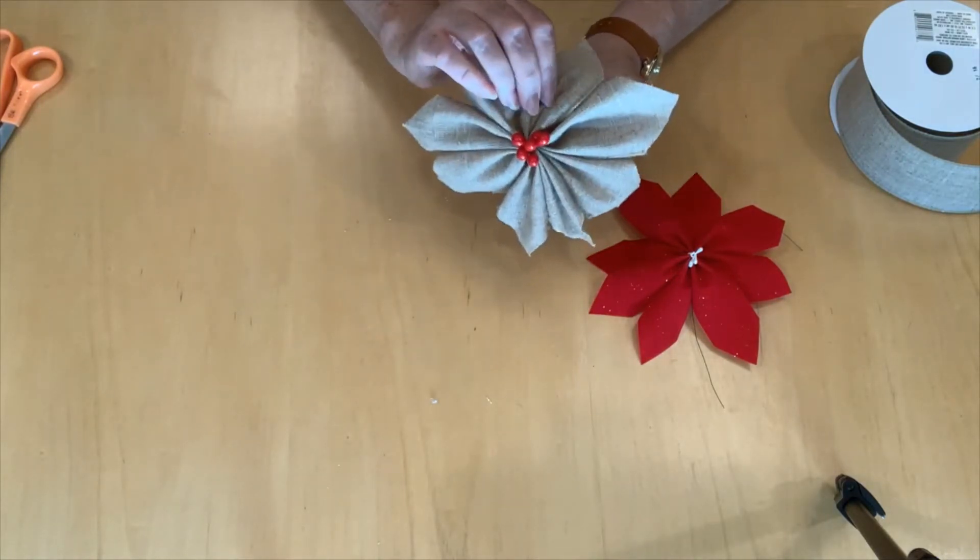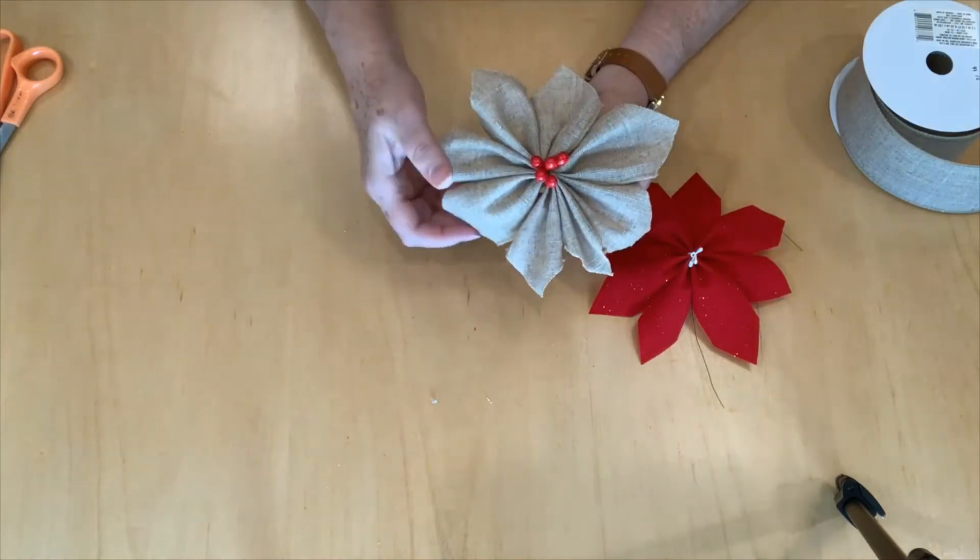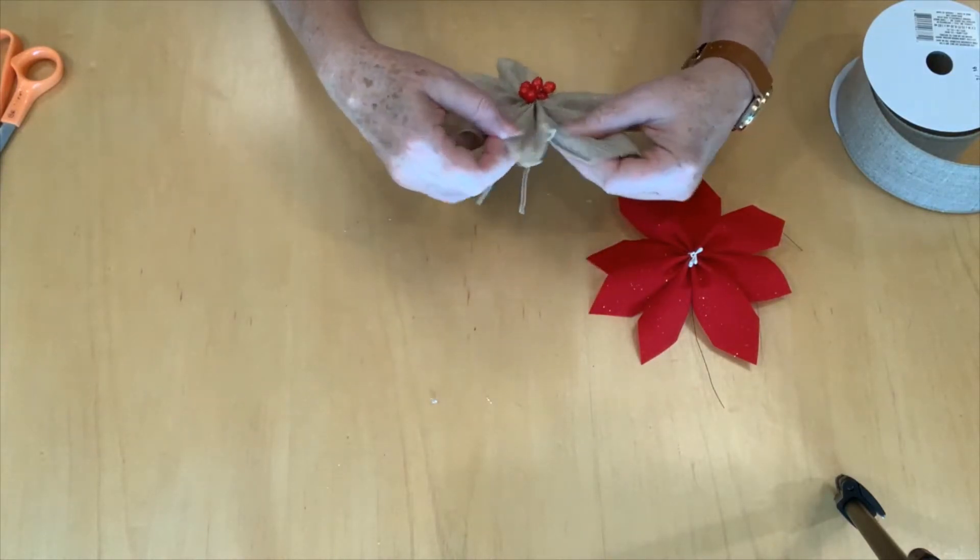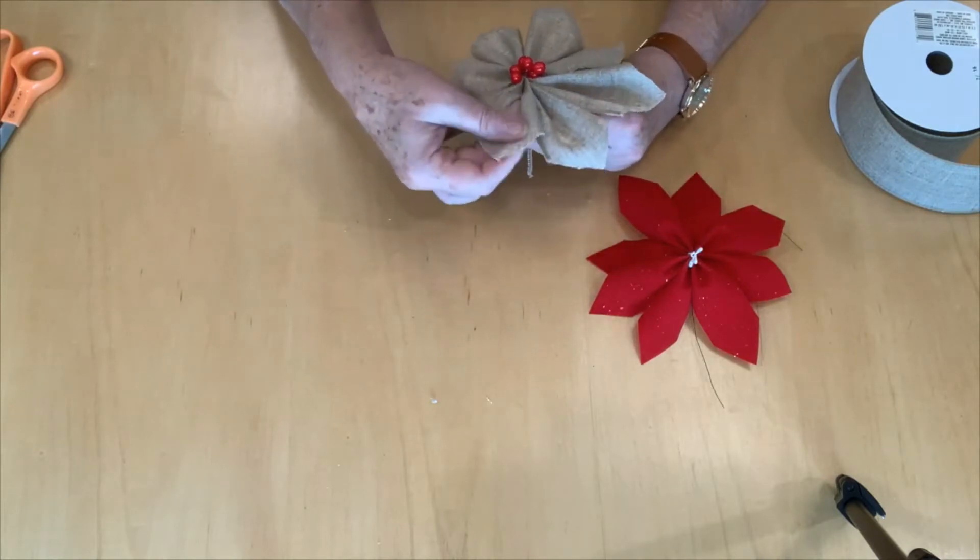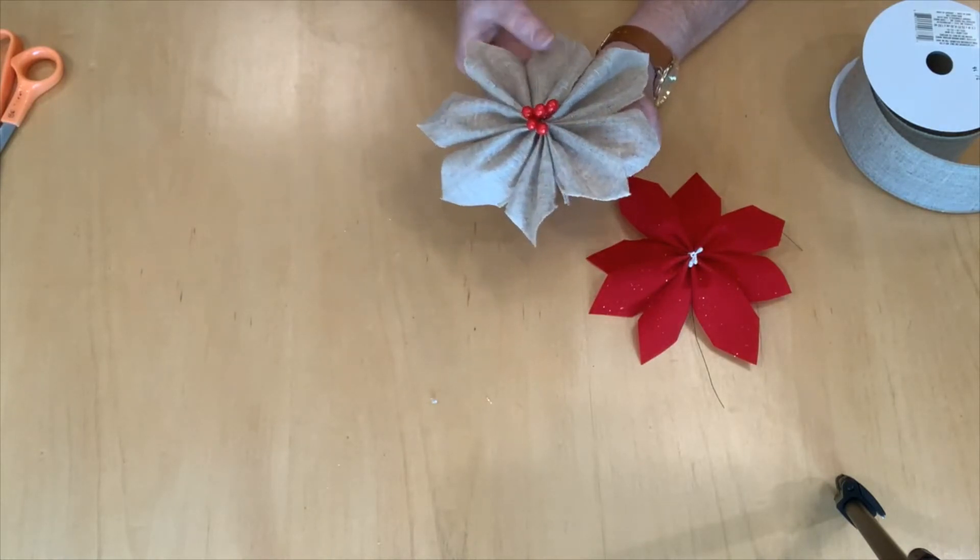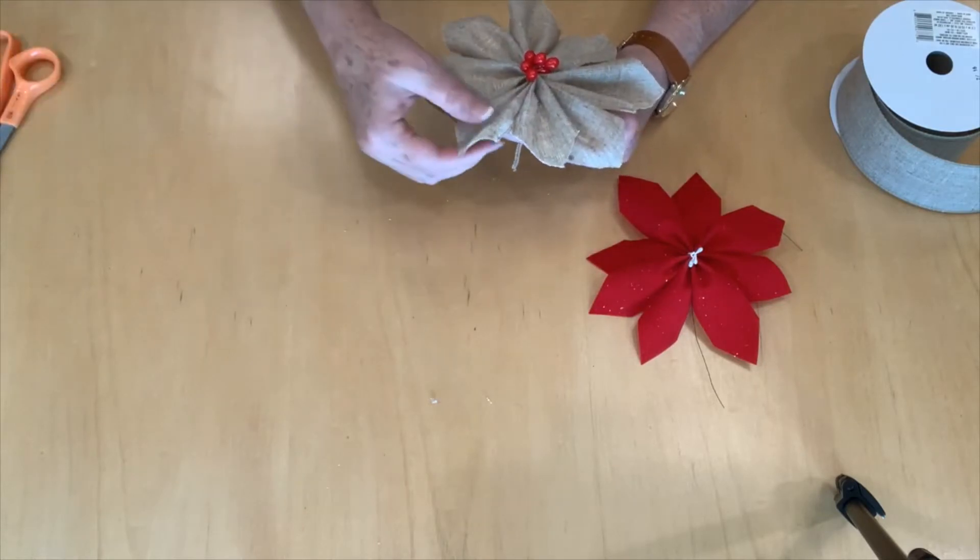You can see now that it started to look like a poinsettia. I've got one here that doesn't want to cooperate. You can also see that my leaves are a little bit lopsided. I've got some that are a little longer on one side, some that are a little shorter on the other.